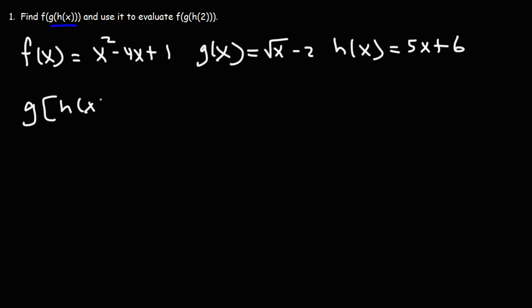So g of h of x, it's going to be g, so the square root. But instead of writing x, I'm going to take h and replace x with it. So we're going to replace x with 5x plus 6. So that's g of h of x.